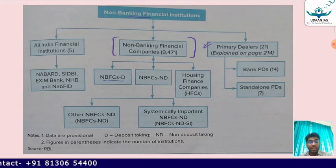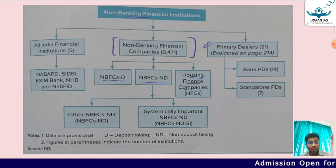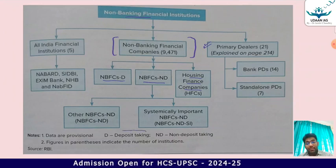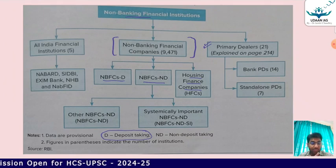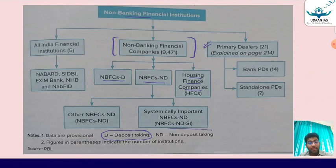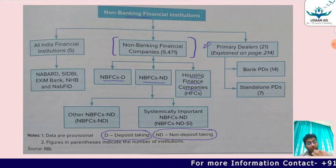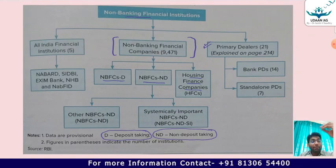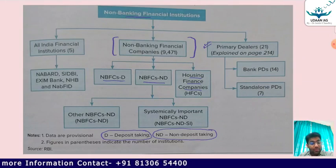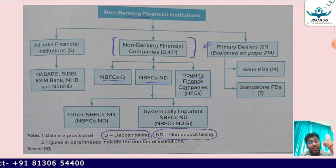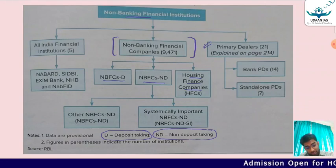The types of NBFCs include: NBFC-D (deposit taking), NBFC-ND (non-deposit taking), and housing finance companies. NBFC-D means these are deposit-taking NBFCs — people are depositing their money in them. NBFC-ND means non-deposit taking — NBFCs in which people are not depositing their money.